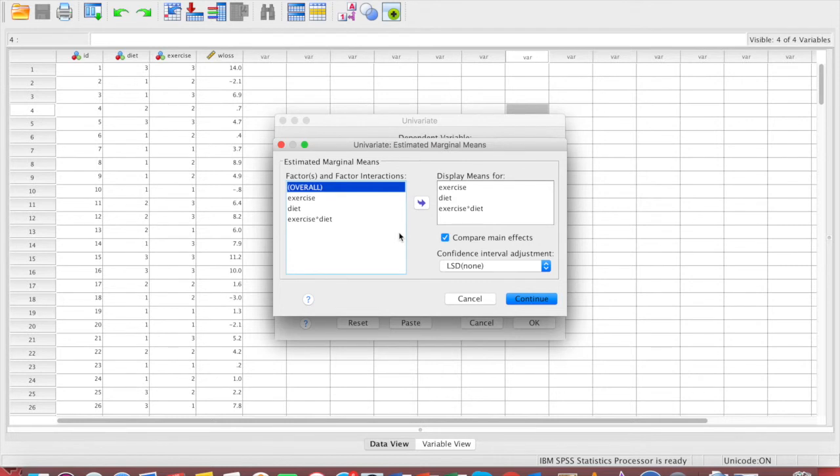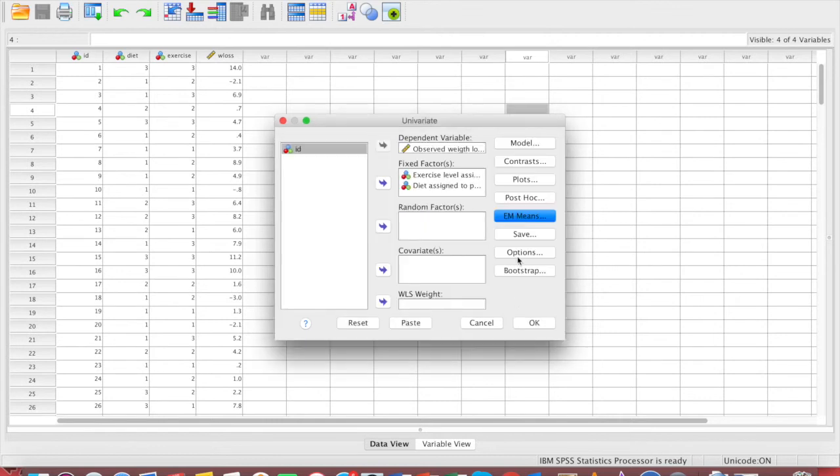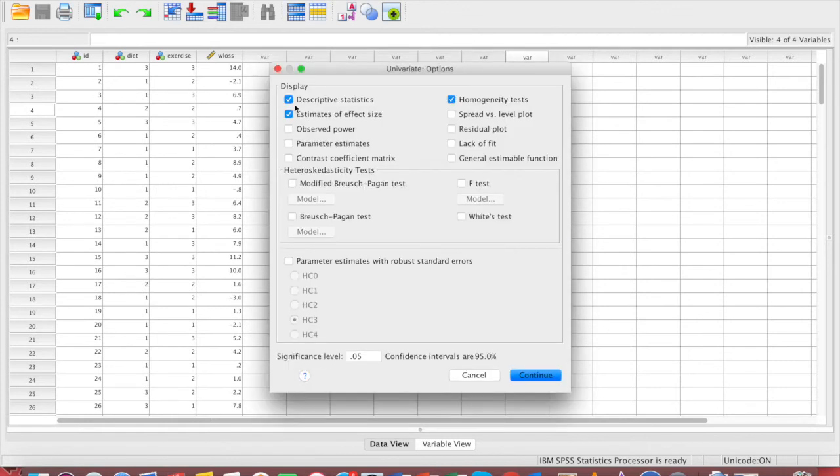And then we will need estimated marginal means because we're dealing with unequal sample sizes here. Unequal sample sizes meaning that on two-way ANOVA data like this, the number of people who diet on type 1 and type 2 is of course different. Each of the participants here has a different diet, and some have the same, some have different. So we are dealing with unequal sample sizes here. And then we just put exercise, diet, and the exercise with diet, and then we take the comparison effects and choose the least significant difference one.